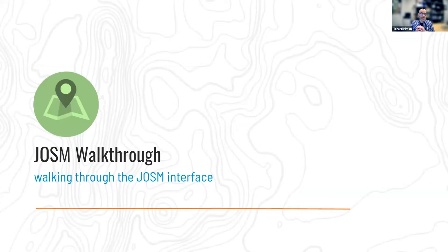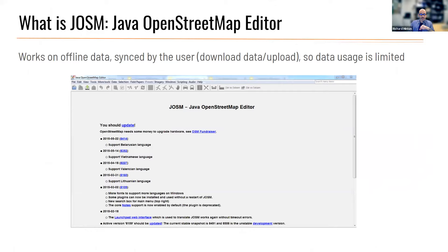When you first open JOSM, it looks fairly generic — you have menu items across the top, a few buttons and tools, and possibly an update prompt. Updates come out fairly regularly, so once or twice a year it's a good idea to keep current with the most updated patches. If you have a version that's too old, JOSM will prompt you to update because some functions may not be working quite as well.